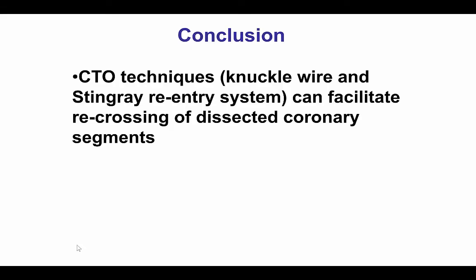In summary, this is another case demonstrating that CTO techniques — specifically re-entry using a knuckle wire and then the Stingray balloon — can help salvage a case when there is dissection of the native coronary artery during PCI attempts, instead of having to do something more radical such as emergency coronary bypass. Thank you.